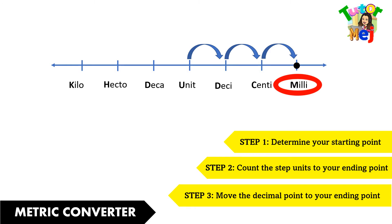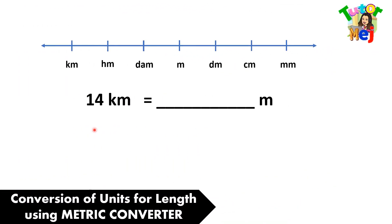To further understand this, let's have some examples. We have 14 kilometers to be converted to meters. Let us affix 14 here, and then count how many units from kilometer to meters. We have 1, 2, 3. Here, let us put the decimal point,